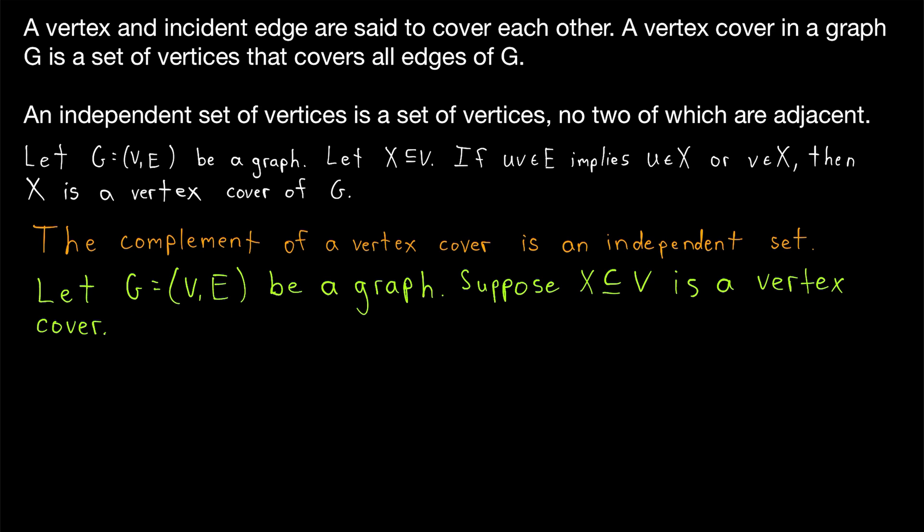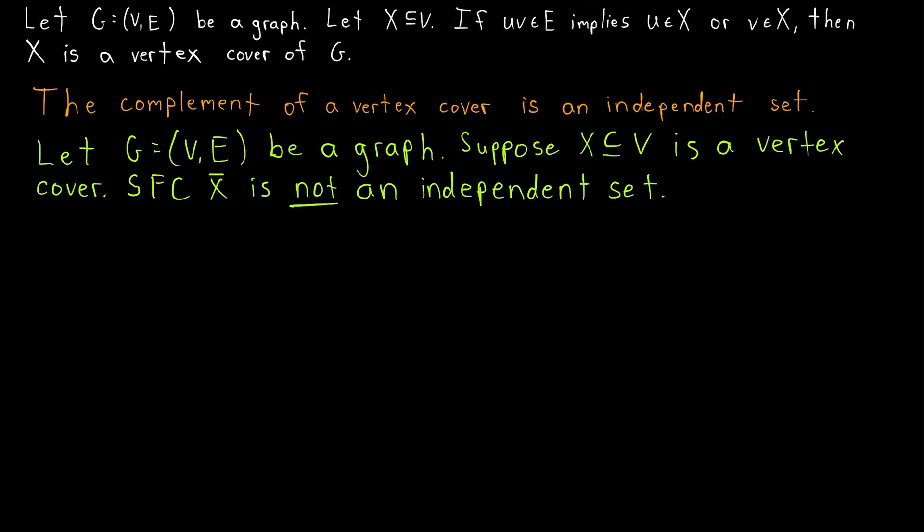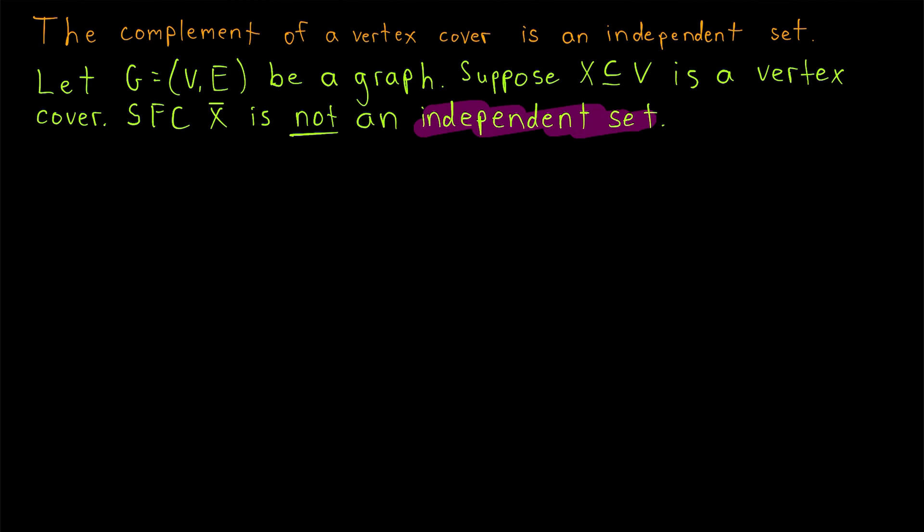Now we want to prove that the complement of X is an independent set. So we'll say suppose for contradiction that the complement of X, which we'll write X with a bar over the top of it, suppose for contradiction X complement is not an independent set. Now we'll be able to use the definition of independent set to get a contradiction. In order for X complement to not be an independent set, that means there must be two adjacent vertices in X complement. So there must exist two vertices u and v in X complement so that uv is an edge of the graph.